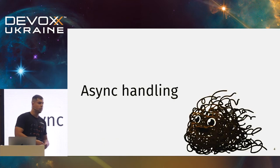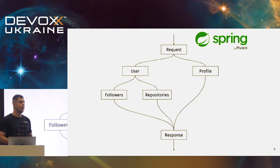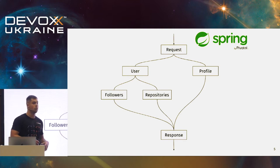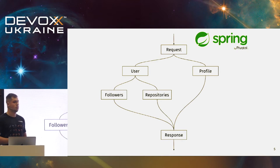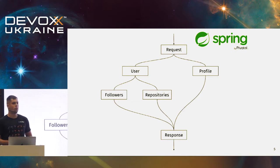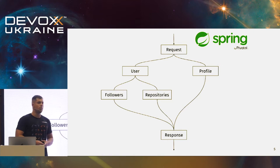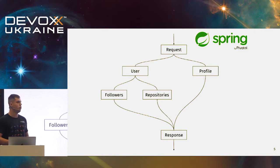The first problem we wanted to solve was synchronous handling. We had a regular Spring Boot application running on servlets, and for incoming requests we need to do requests to downstream services, combine those results, do more requests, combine results again, and after that return a response to the user. Some services need to do more than 100 requests for one user, so we wanted to optimize this, and we chose a non-blocking HTTP client. Response time is crucial for us, so we wanted to do this concurrently.